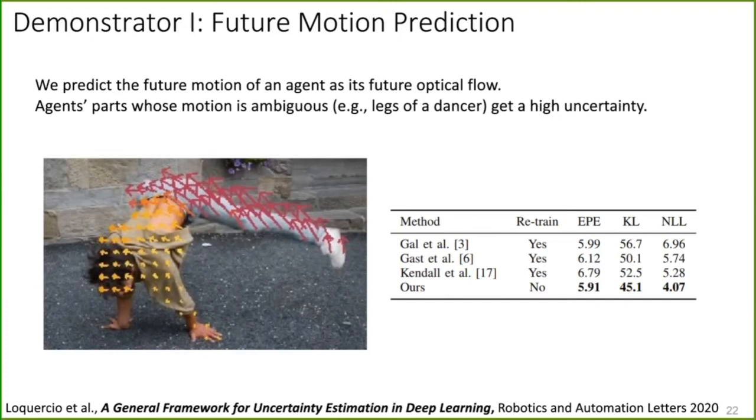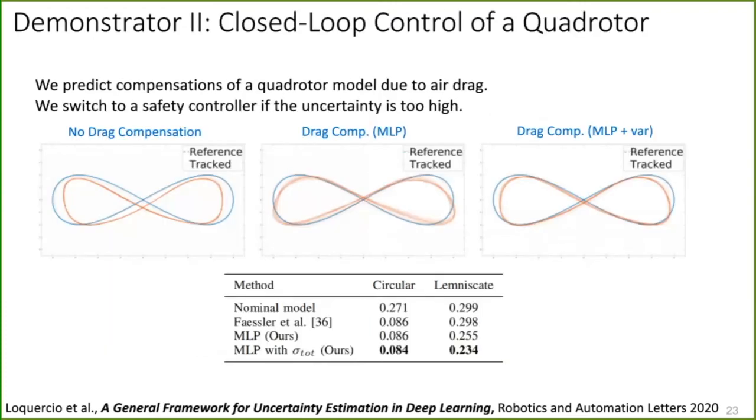To connect to the previous part, we've seen how uncertainty works together with hand-to-hand control. In particular, we've used a neural network to predict motion drag and air drag and put this together with uncertainty in the following way. If the uncertainty of the neural network is too large, we switch to a safety controller. We've seen that this policy improved tracking error with respect to neglecting uncertainty completely.